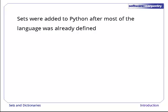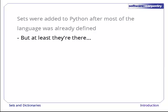Sets were a relatively late addition to Python. The language was already 10 years old when they were put in. That's still better than most languages, though. Despite how often sets come up in various algorithms, most languages still don't provide them as a built-in type.